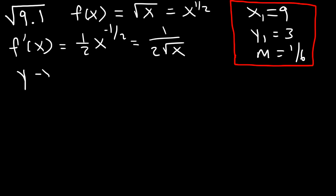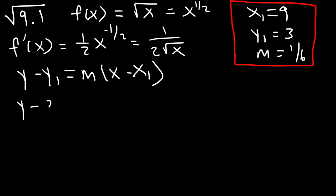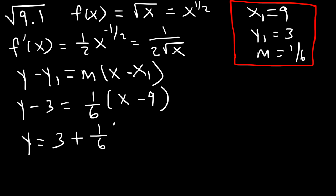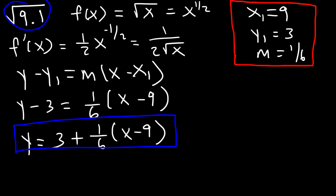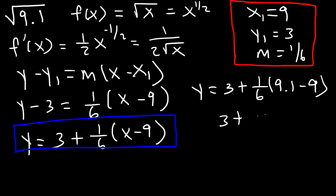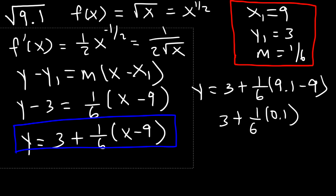So it's going to be y minus y1 equals m times x minus x1. y1 is 3, m is 1 over 6, and x1 is 9. Adding 3 to both sides, it becomes y equals 3 plus 1 over 6 times x minus 9. Now in this form we can estimate the square root of 9.1. So it's going to be 3 plus 1 over 6 times 9.1 minus 9. 9.1 minus 9 is 0.1. Now what is 1 divided by 6? If you're not sure about this, you can use long division to convert the fraction into a decimal.